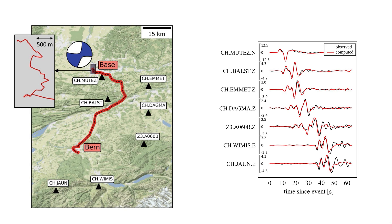With spectral element simulations, we first tuned the underlying one-dimensional velocity model to fit the observations at conventional seismic stations around the cable. For periods between 3 and 25 seconds, you can see that the computed and observed displacements agree at the receivers.